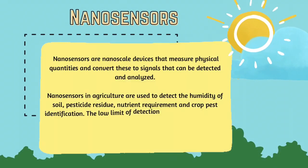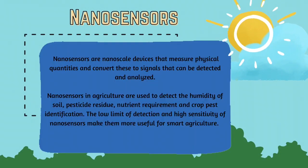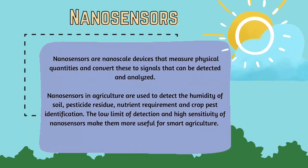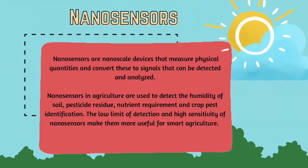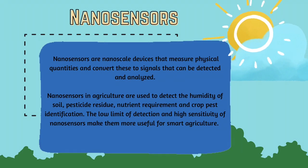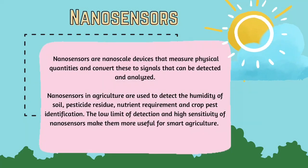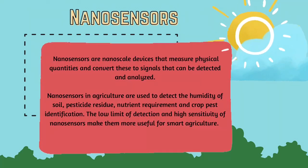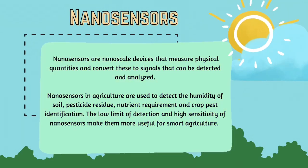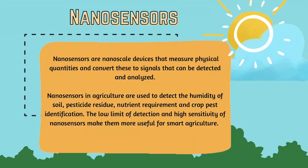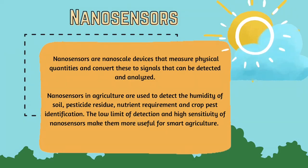Next, nanosensors. Nanosensors are nanoscale devices that measure physical quantities and convert these to signals that can be detected and analyzed. In agriculture, nanosensors are used to detect the humidity of soil, pesticide residue, nutrient requirements, and crop pest identification. The low limit of detection and high sensitivity of nanosensors make them more useful for smart agriculture.